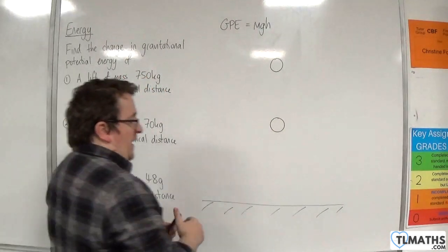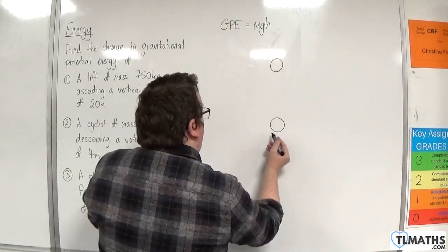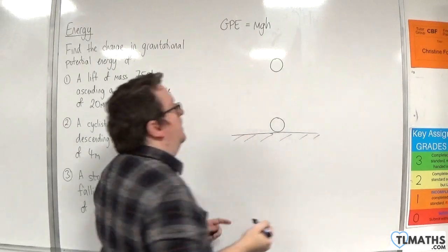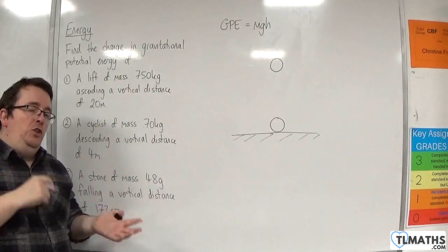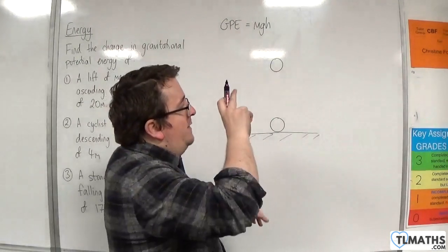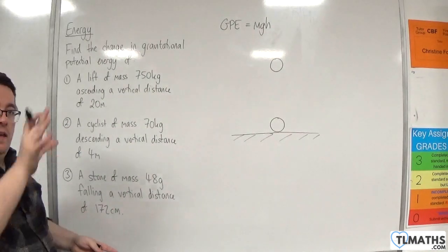Or you could think of the floor as being here, so the ball lands on the floor. Either way, the change in gravitational potential energy will be the same. So because you're looking at that change, it doesn't matter which scenario you really think of it as.